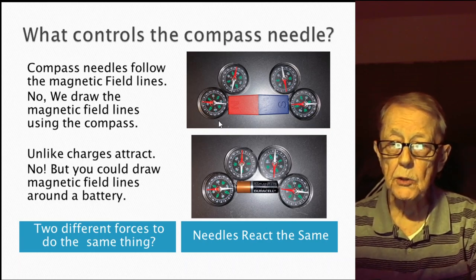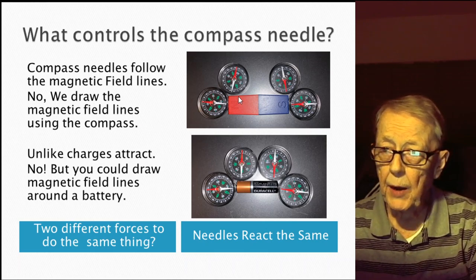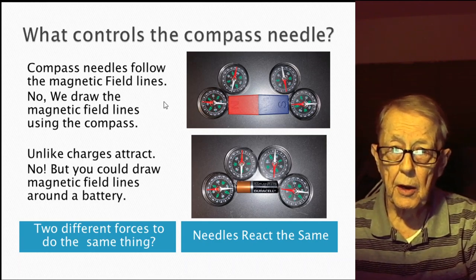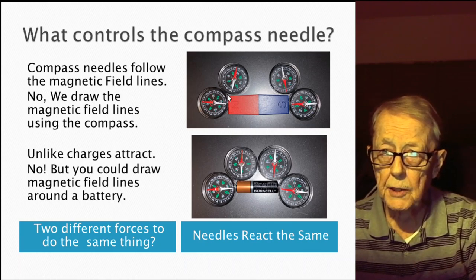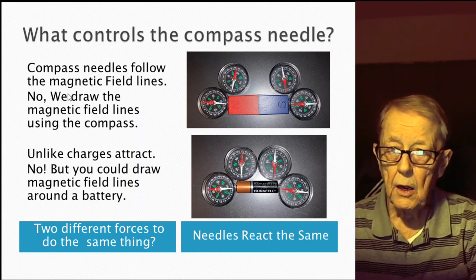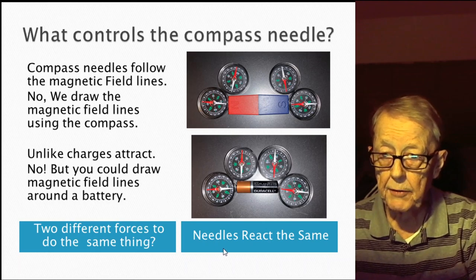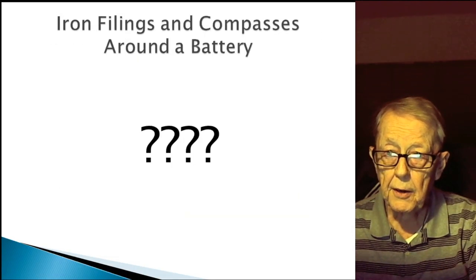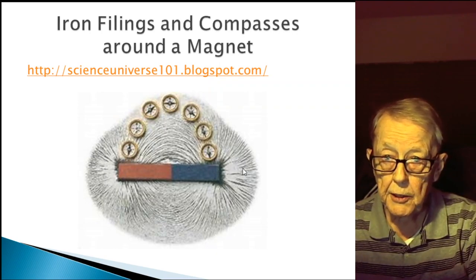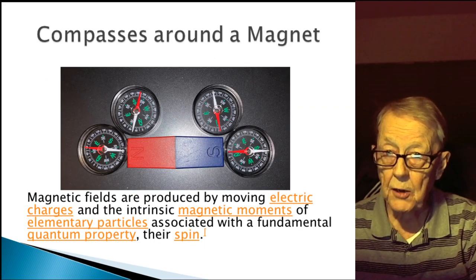My question is: what actually controls the compass needle? When you ask an ordinary person — or oftentimes a scientist or engineer — they'll say the compass needle follows the magnetic field lines. But that's not right. We draw the magnetic field lines using the compass. In that earlier picture, you place points here and here and here and connect them — those lines are drawn using the compass needle. So the lines don't control the position of the needle.